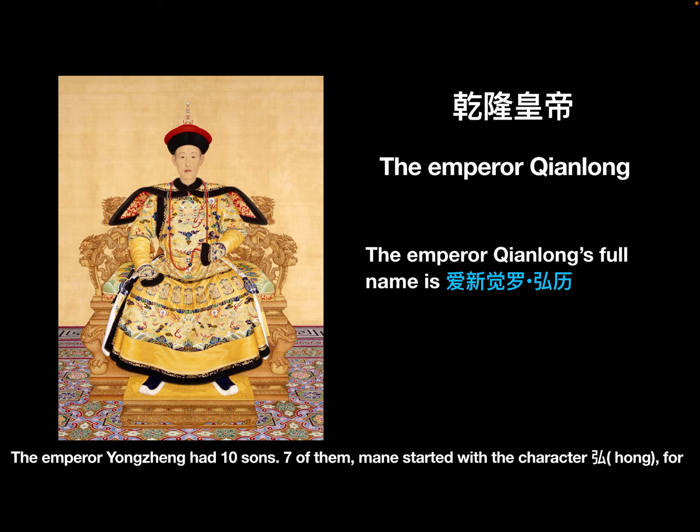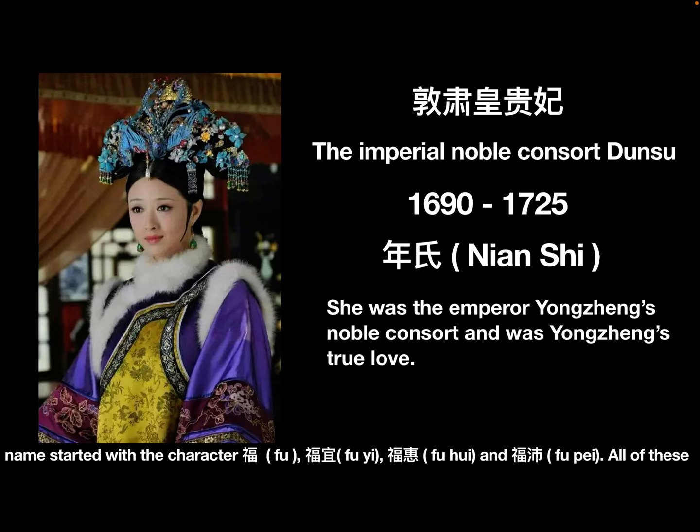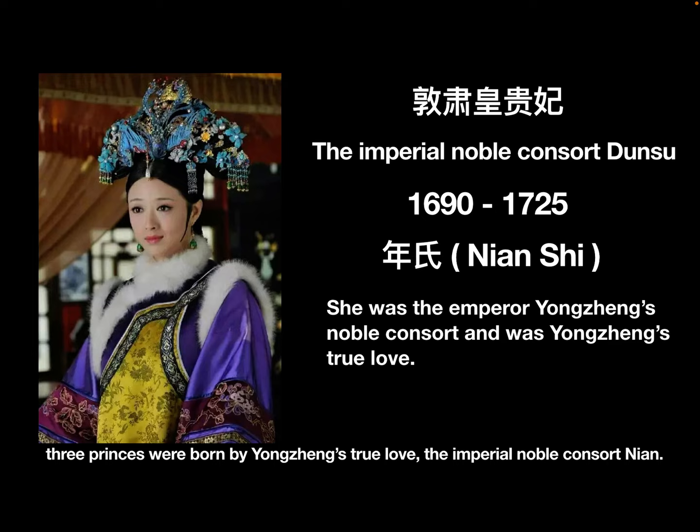Emperor Yun Zheng had 10 boys. Seven of them had names starting with the character Hong. For example, Emperor Qianlong's name was Hong Li. Yun Zheng had three sons whose names started with the character Fu: Fu Yi, Fu Hui, and Fu Pei. All three of those princes were born by Yun Zheng's true love, the Imperial Noble Consort Nian.